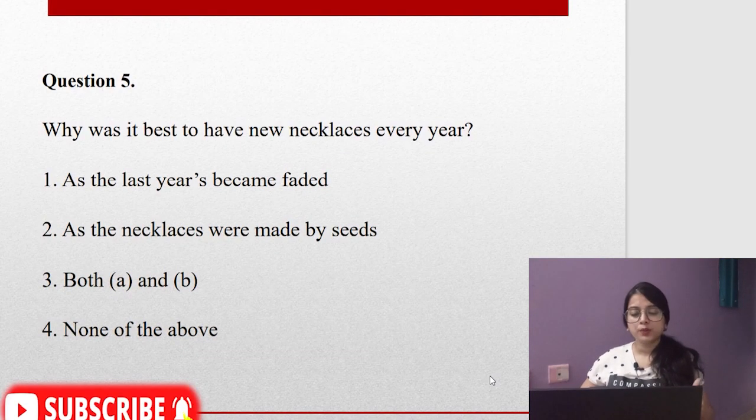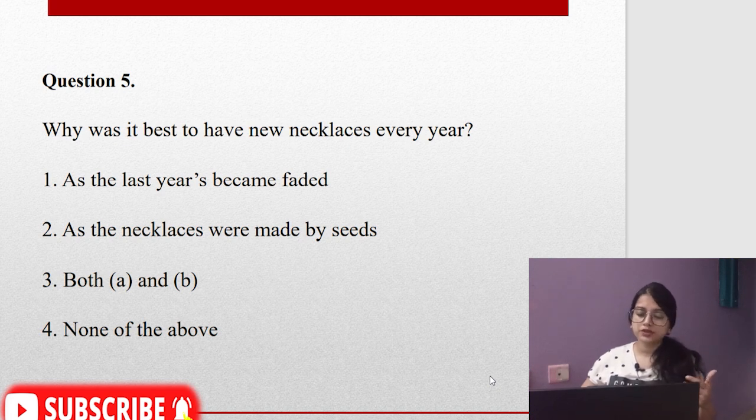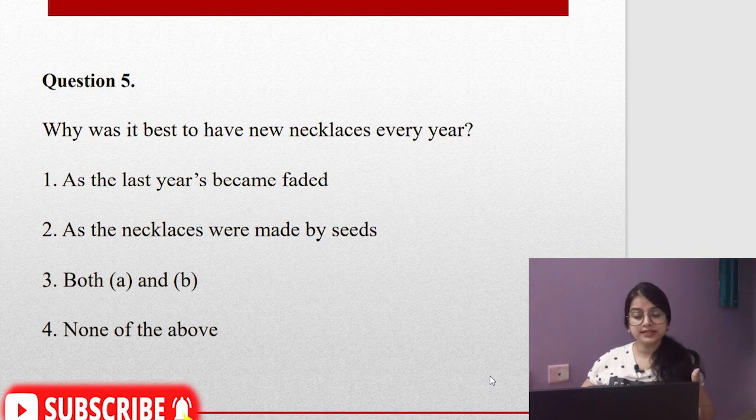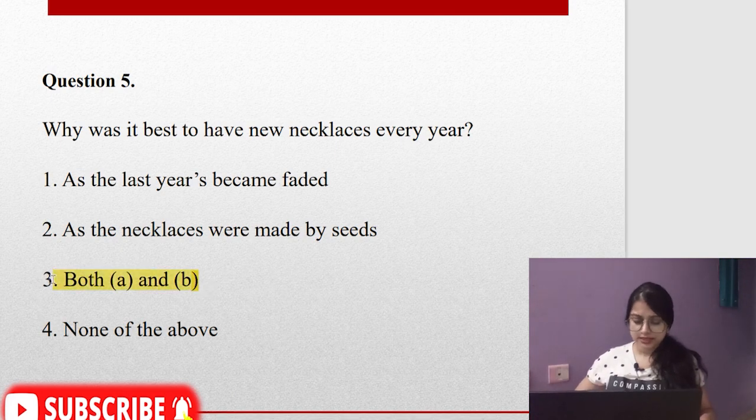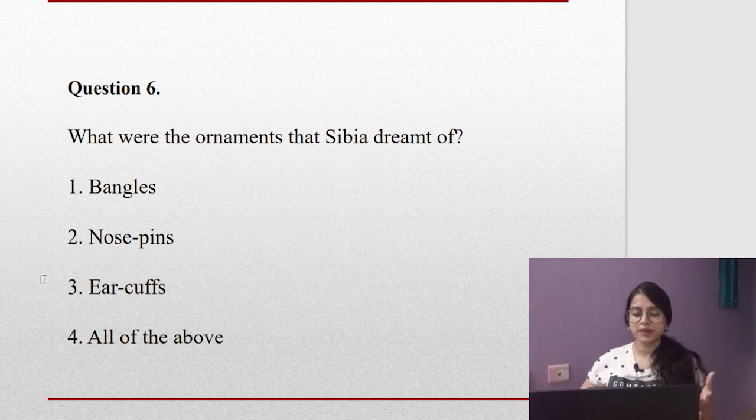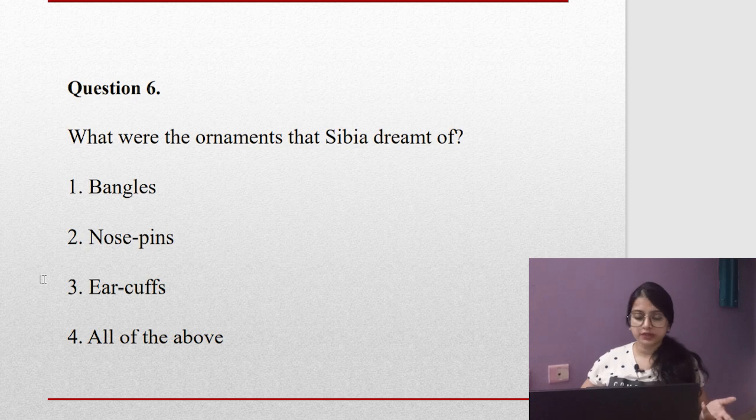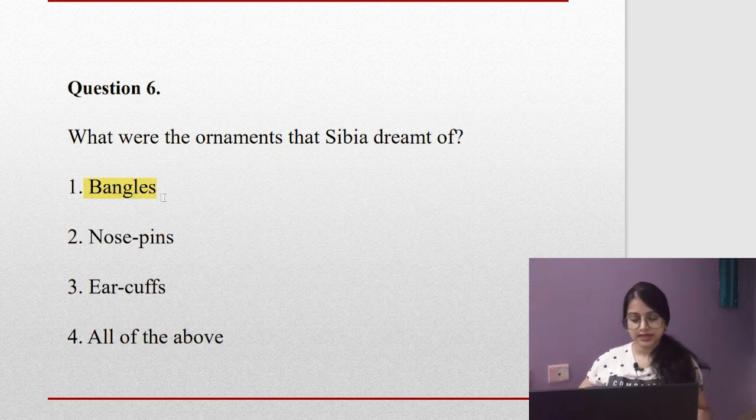Question number five: Why was it best to have new necklaces every year? As the last year's became faded, or as the necklaces were made by seeds? Number one is correct, number two is also correct because yes, the necklaces were made by seeds. So the third option, both A and B, is correct. Question six: What were the ornaments that Sibia dreamt of? Bangles, nose pins, ear cuffs, or all of the above? Yes, it is only bangles.